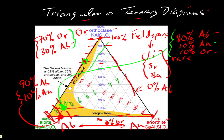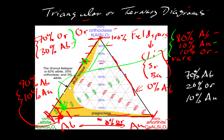One last example: seventy percent albite and twenty percent orthoclase, which leaves ten percent anorthite to sum to a hundred. Here's the seventy percent contour for albite — something lying along that line. The twenty percent contour for orthoclase is over here, so we should have an intersection there. As a double check, we can look at the ten percent contour for anorthite, and it hits right where we would expect. So this mineral plots right here. That's how we plot points in a ternary or triangular diagram.